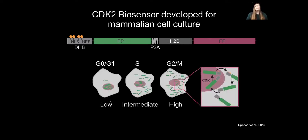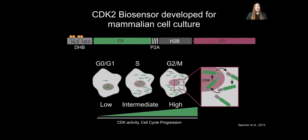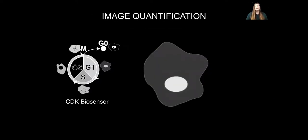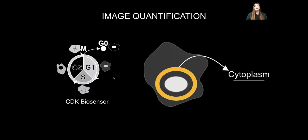In G0/G1, when CDK activity is low, the sensor predominantly resides in the nucleus. As CDK activity rises, the sensor is phosphorylated; this phosphorylation occludes the nuclear localization sequence and the nuclear export sequence dominates, leading to peak exclusion of the sensor from the nucleus at G2. In G0 you have a high amount of sensor in the nucleus, S phase is roughly even between nucleus and cytoplasm, and G2 shows exclusion of the sensor. We can quantify this by taking the mean fluorescence intensity of the cytoplasm divided by that of the nucleus.